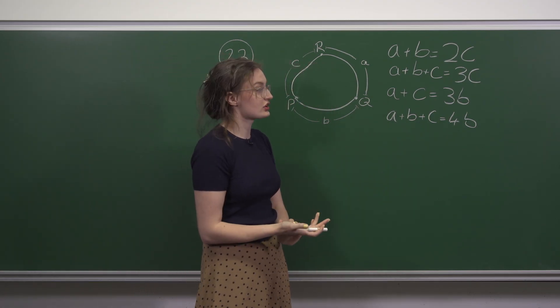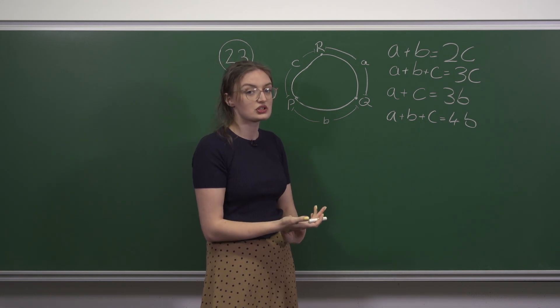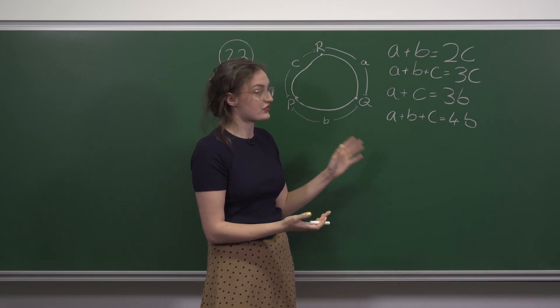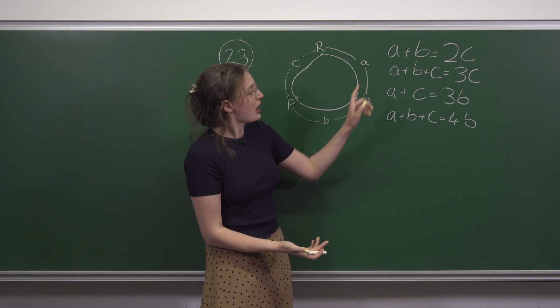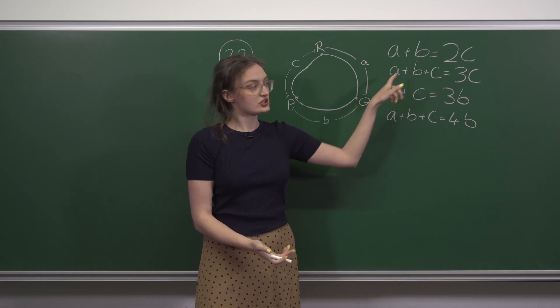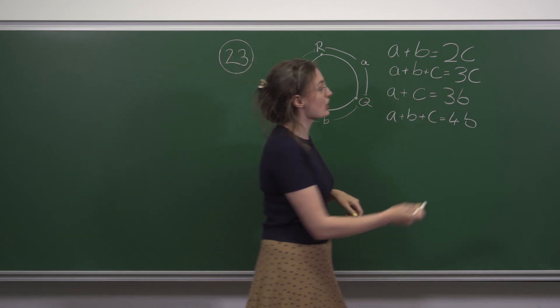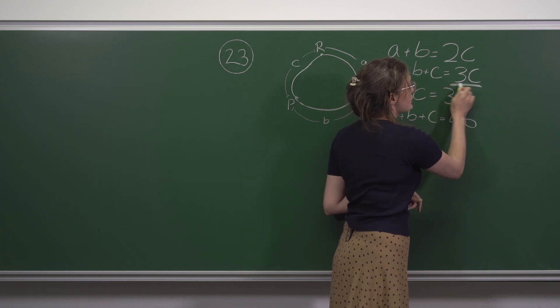Okay now we can start to eliminate options for the lengths of the roads. Because we're told that all of these are integers we now know that the answer must be a multiple of 3.